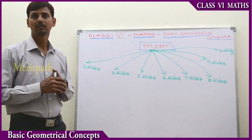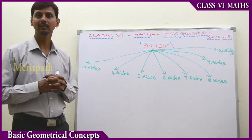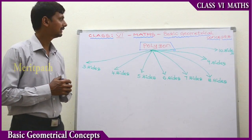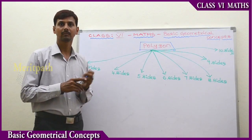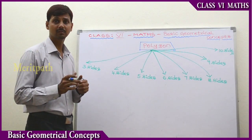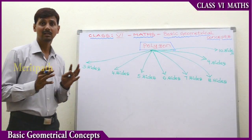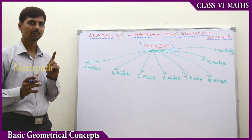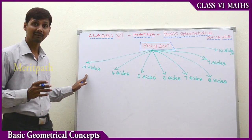Polygon — a simple closed figure which is bounded by three or more line segments is called a polygon. Polygons have different types, starting with three sides. It can have three sides,